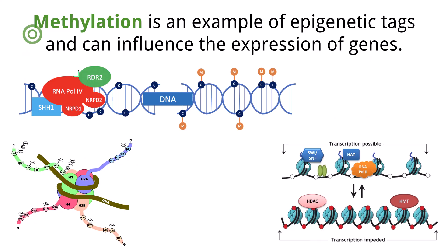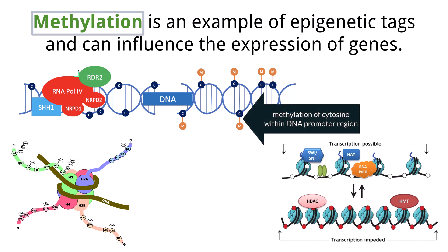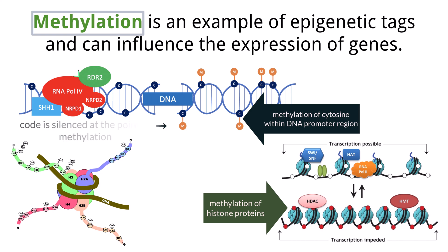Let's take a deeper look at methylation and the impact it has on gene expression. Methylation can occur in two places: methylation of cytosine in the promoter region, which would inhibit transcription of the gene, and methylation of the amino acids in histone proteins, which would affect transcription of the gene. Methylation, when attached to cytosine, will silence the code at the point of methylation. Any DNA sequences containing methyl groups will not be able to undergo transcription. Methylation frequently occurs in the promoter region, and these methyl groups are called epigenetic tags and are like light switches, turning transcription off and on.